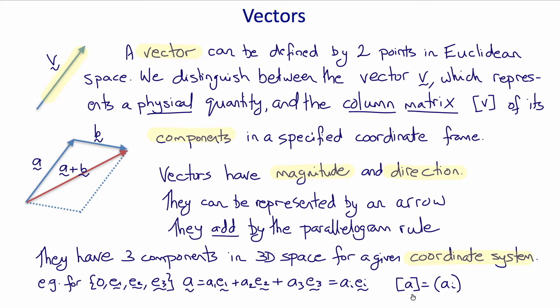The matrix a, a column matrix, is the matrix of the components of the vector. Note that the matrix does not include the coordinate system, so the matrix is not the same as the vector. The vector is the components and the coordinate system. With a different coordinate system there would be different components.